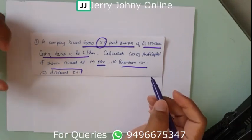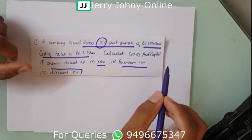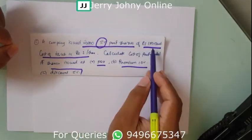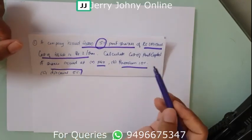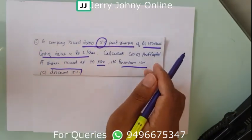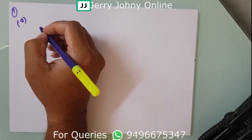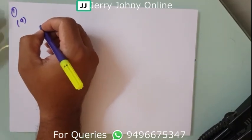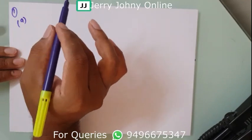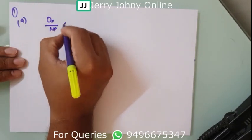There are three situations. The flotation cost is rupees 2 per share, meaning 2% on ₹100 per share. Part A: when shares are issued at par. The formula is kp = dp / NP × 100. DP is the dividend: 100 × 20,000 shares × 5% = ₹1,00,000.